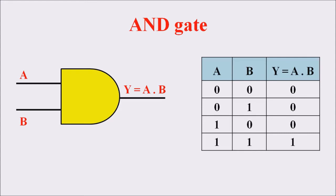Before going to the representation of D Latch, let us refresh the AND gate. AND gates enable an output if and only if both of its inputs are present. For a two-input AND gate, the output Y equals A AND B. The truth table is: 0,0 → 0; 0,1 → 0; 1,0 → 0; 1,1 → 1. The output is 1 if and only if all inputs are 1.